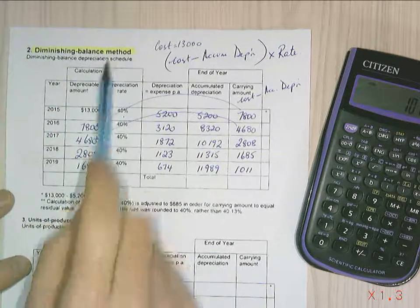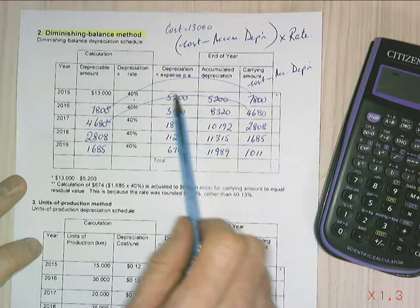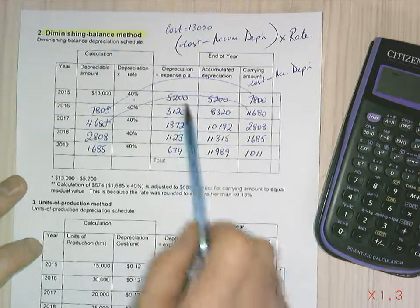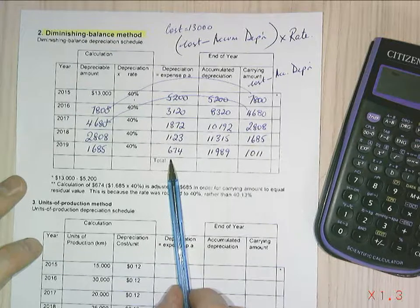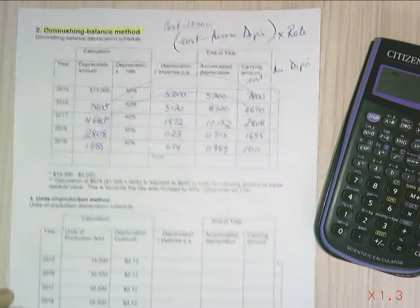Now, the diminishing balance method, businesses like to use it for technological assets, where in the earlier periods, the use of the asset is going to be much higher than in latter periods. And so the depreciation needs to reflect the usage.